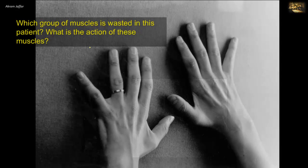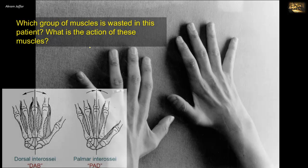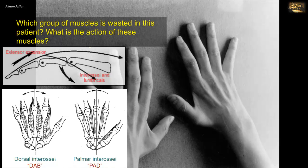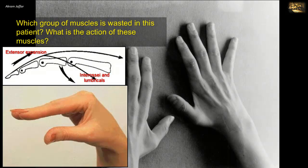Regarding the function, the dorsal interossei abduct — DAB, dorsal abduct — while the palmar interossei adduct — PAD. It should be remembered that the interossei are not only attached to the proximal phalanges, but also to the extensor expansion. So when the dorsal interossei contract together with the palmar group, abduction will cancel out adduction, and both groups will act on the extensor expansion, causing flexion of the metacarpophalangeal joint and extension of the interphalangeal joints, a function similar to the lumbricals.